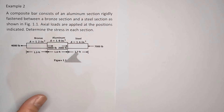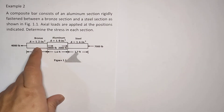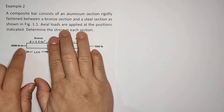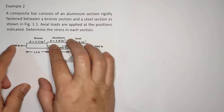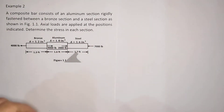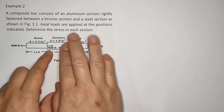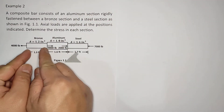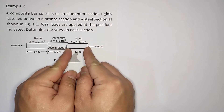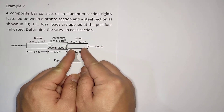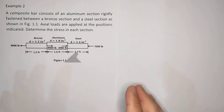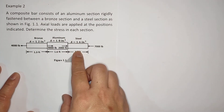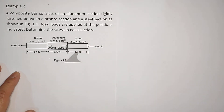You must understand that the bronze has different internal forces compared to aluminum. In this case, the bronze experiences tension — it is being pulled. For the aluminum, let's compute — if I'm not mistaken, this experiences compression. So the bronze will elongate, while the aluminum will contract. It's crucial that you understand each section experiences different loading — different values and different types of loading.